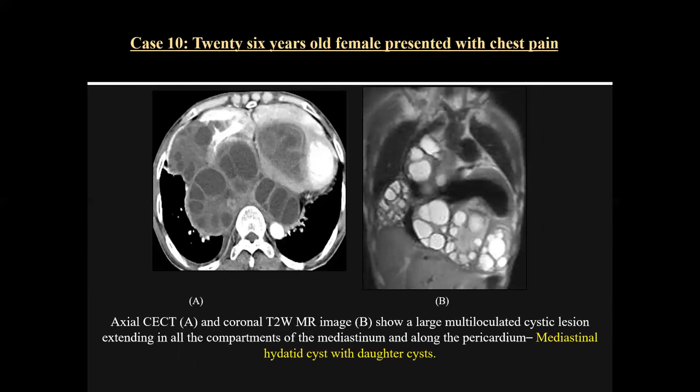Case ten was a 26-year-old female presenting with chest pain. On contrast CT axial scan and T2 coronal MRI image, there was a large multi-loculated cystic lesion extending across all compartments of the mediastinum and along the pericardium, with multiple daughter cysts. This was a case of mediastinal hydatid cyst.